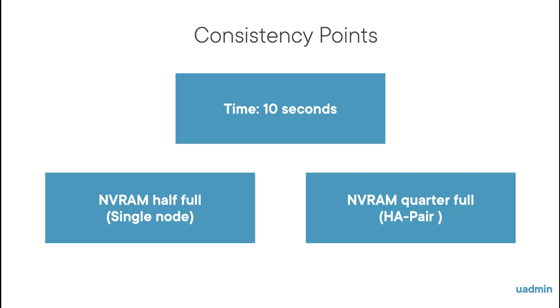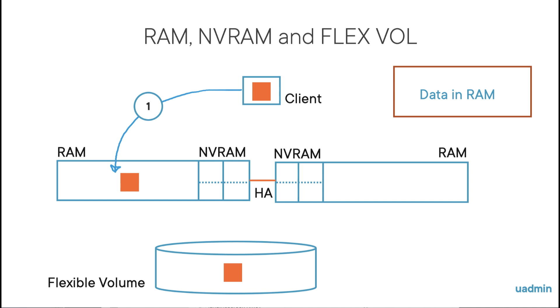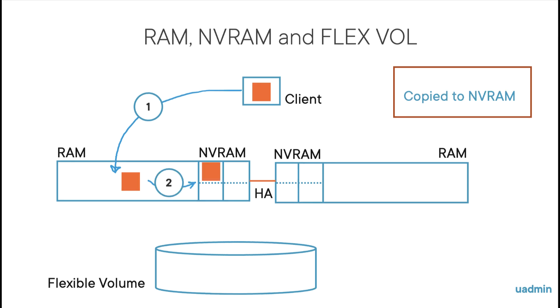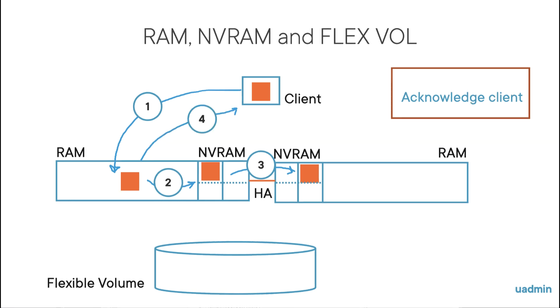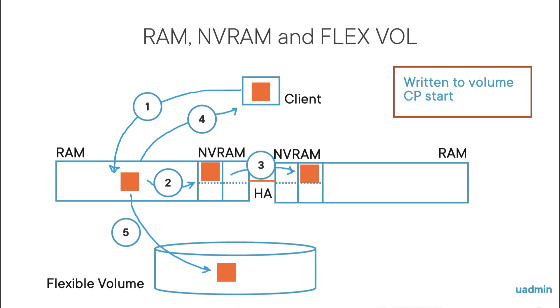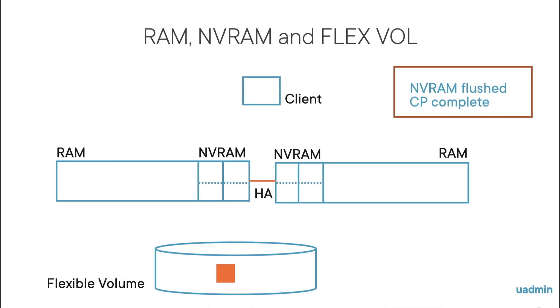The second trigger is when the first NVRAM bank is full in a single node cluster, or when a quarter of NVRAM is full when it concerns an HA pair. The reason for that is, that with an HA pair, data is not just copied to the NVRAM of the node that receives the data, but also to the partner node. So that if the node fails, the partner node can take over. And only when the data is in the partner node's NVRAM, the client is acknowledged. And of course, eventually, the data will be written to disk, and the procedure repeats.